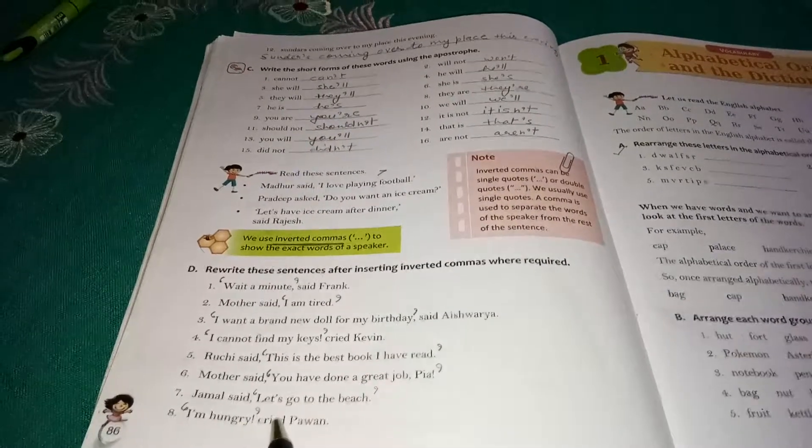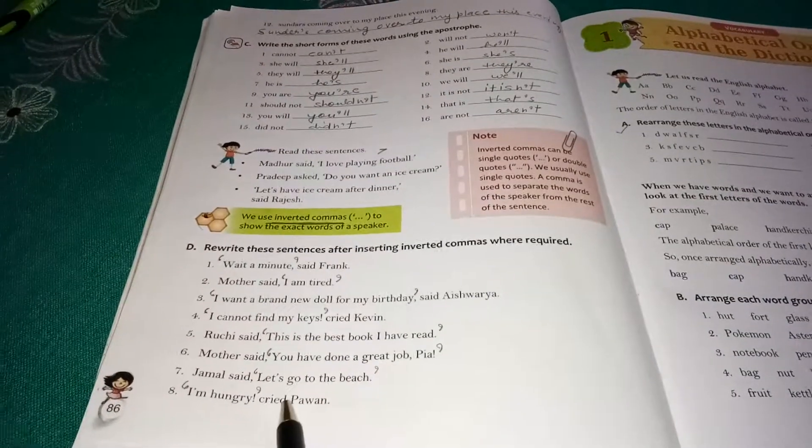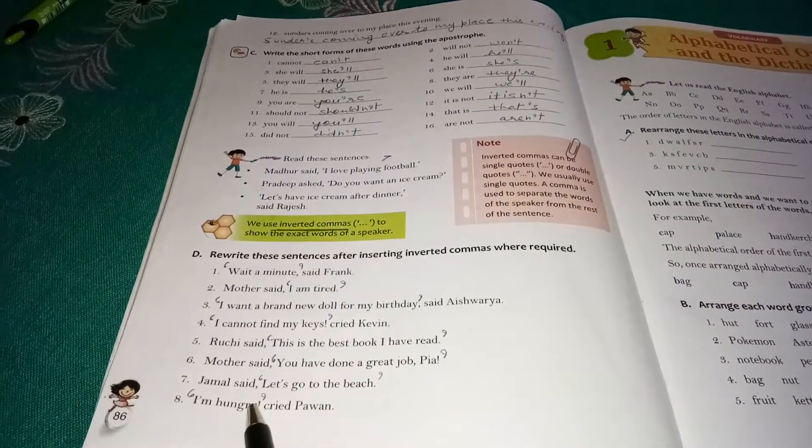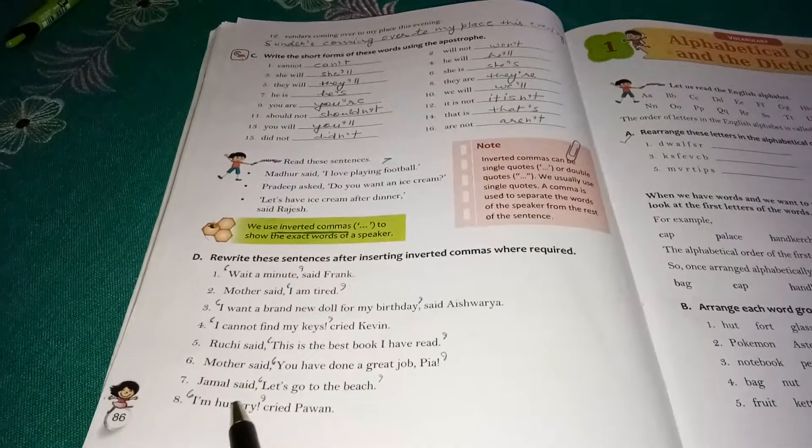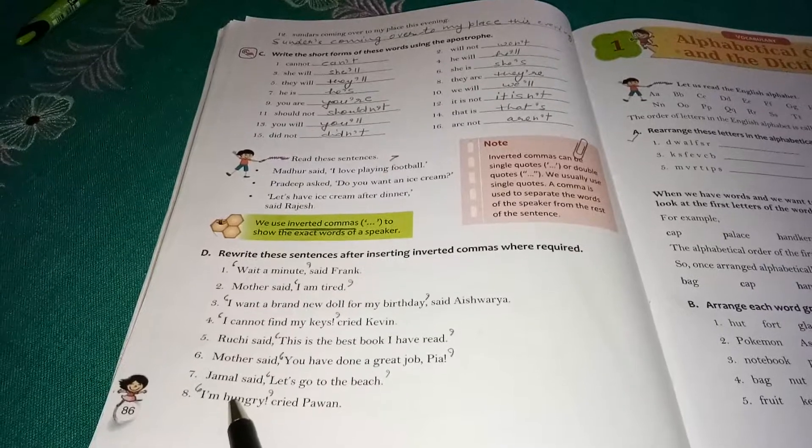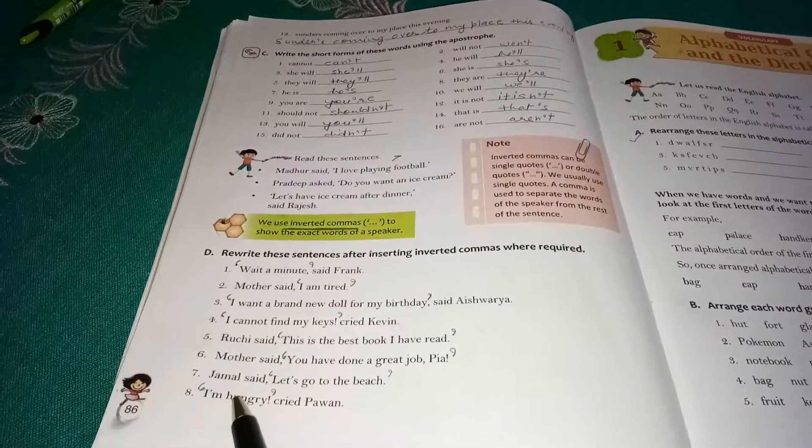Jamal said, "Let's go to the beach." "I am hungry," cried Pawan. This is Pawan's cry, Pawan's dialogue. It's written in inverted comma. Children, go through the video and learn. Thank you.